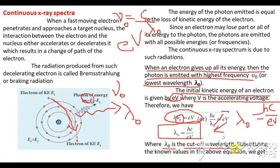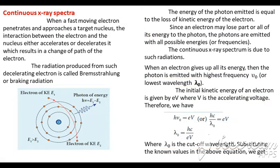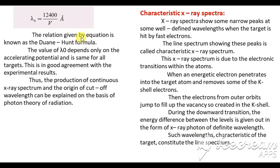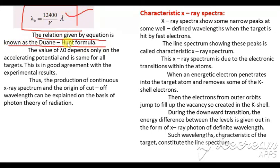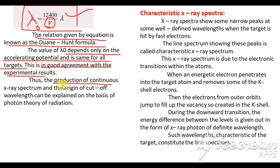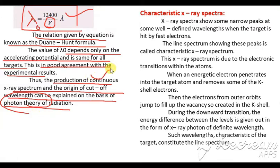Substituting all values — h is Planck's constant (6.626 × 10⁻³⁴), c is the velocity of light, and e is the charge of an electron — we get λ₀ = 12400/V Angstroms. This gives the relation known as the Duane-Hunt formula. The value of λ₀ depends only on the potential and is the same for all targets, which is in good agreement with experimental results. Thus, the production of continuous X-rays and the origin of the cutoff wavelength can be explained on the basis of photon theory.